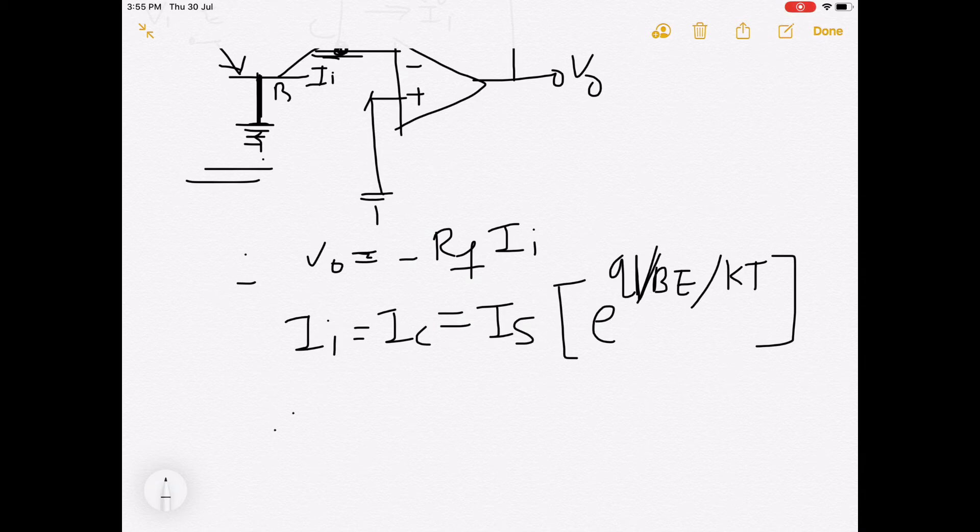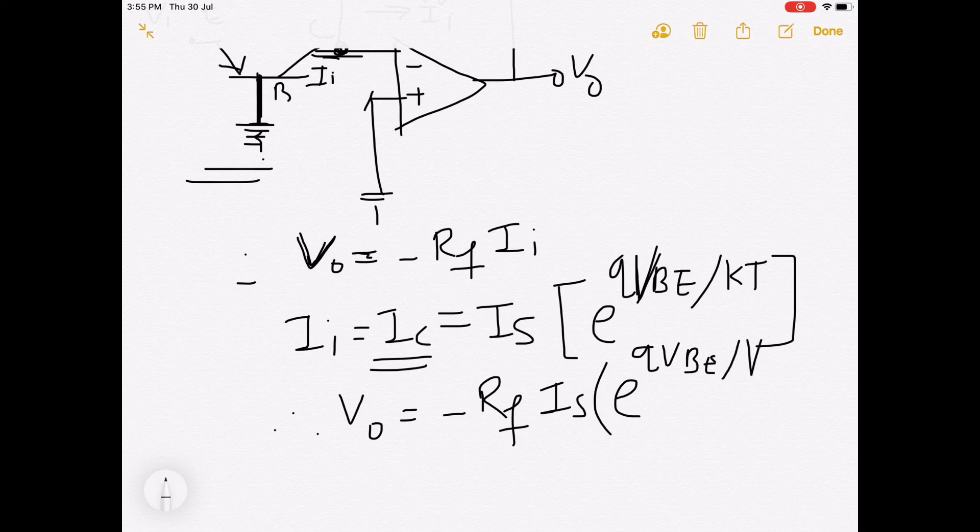Therefore, put this value in the above equation of Vo. Vo equals minus RF into Ii. Ii is nothing but Ic, so it is Is times e raised to qVbe upon kT.